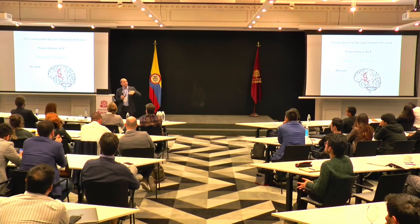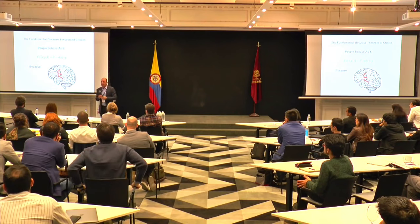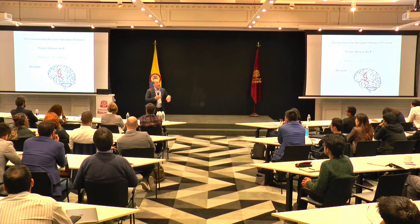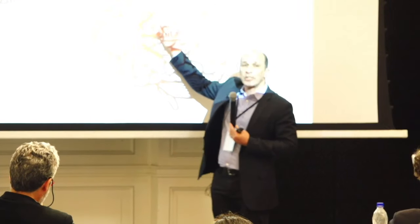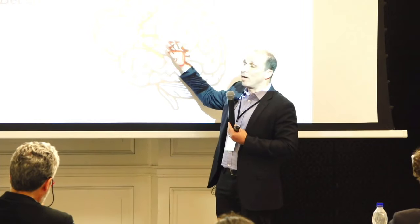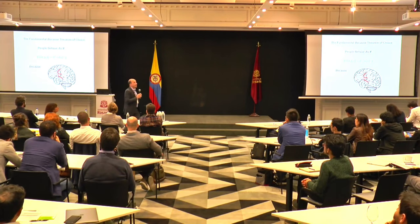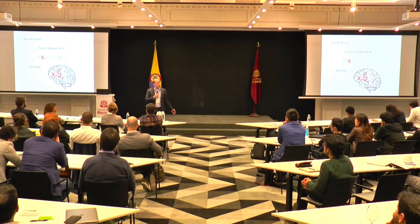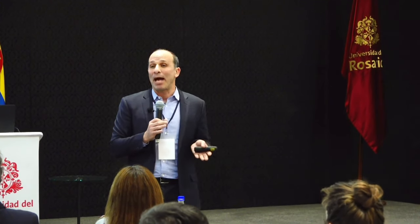Let's zoom to an imaginary time before the behavioral revolution and imagine a neuroeconomist there — like me at age one. At that time we pretty much believed in expected utility theory. The because-version of expected utility would be simply that somewhere in the brain lies the expected utility representation, driven by some representation of delay, some representation of value or preferences, and some representation of probability. But the problem was we discovered that expected utility theory wasn't a particularly good model for human behavior — which makes it a bad fundamental theory for neuroeconomics.